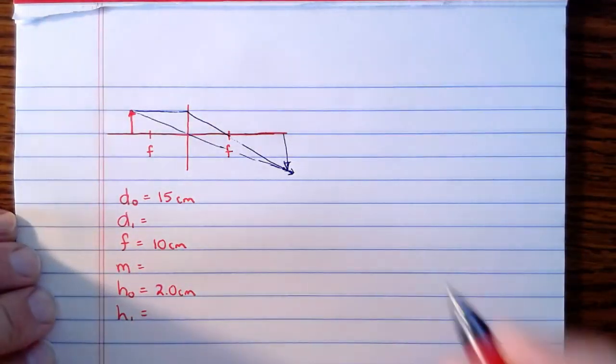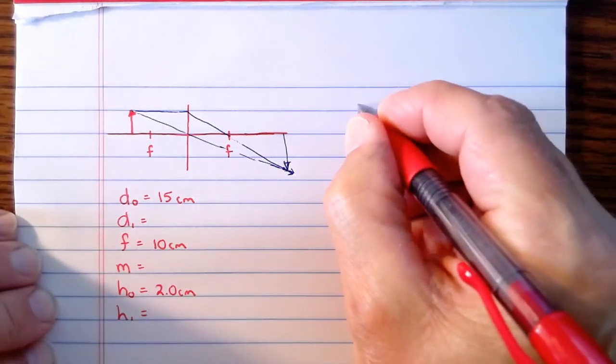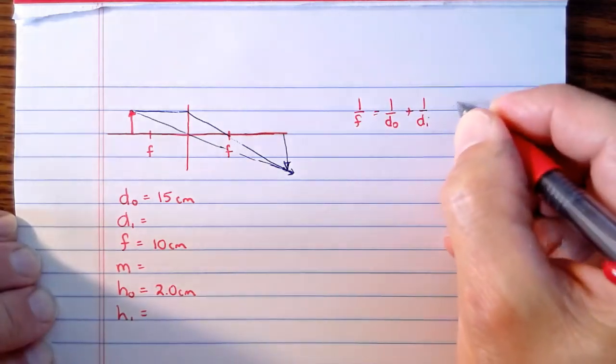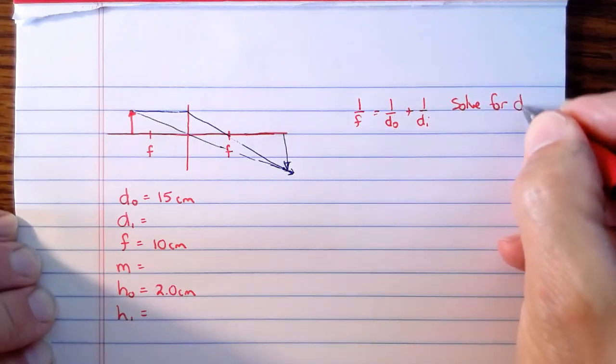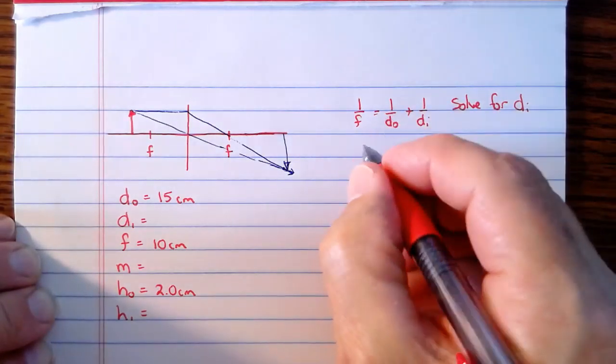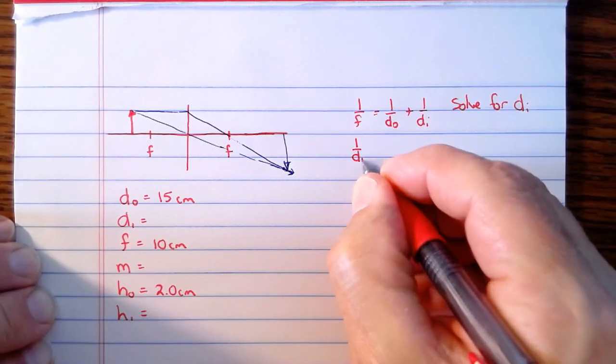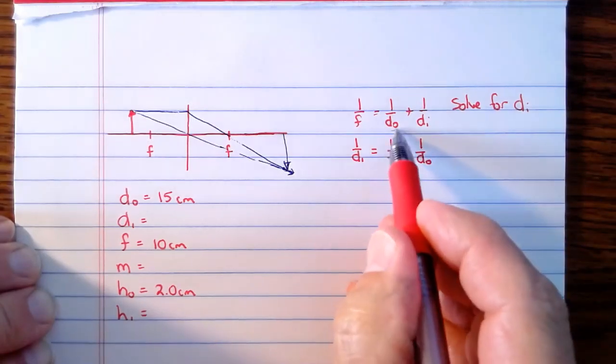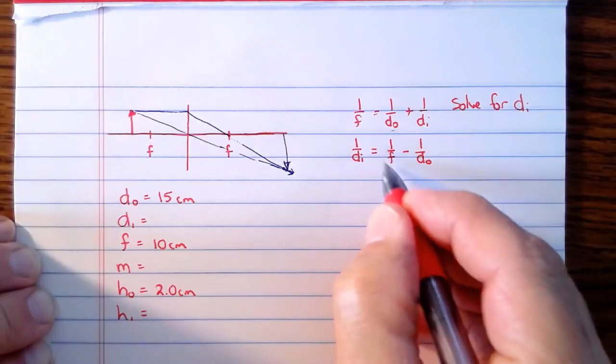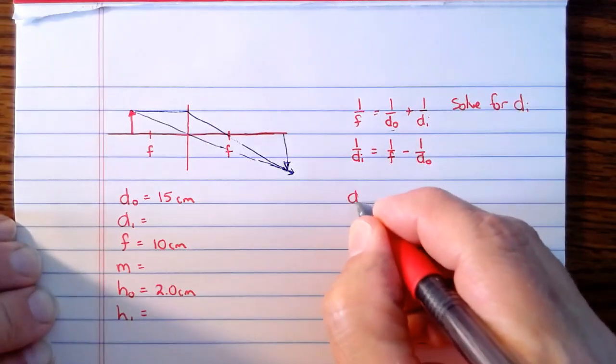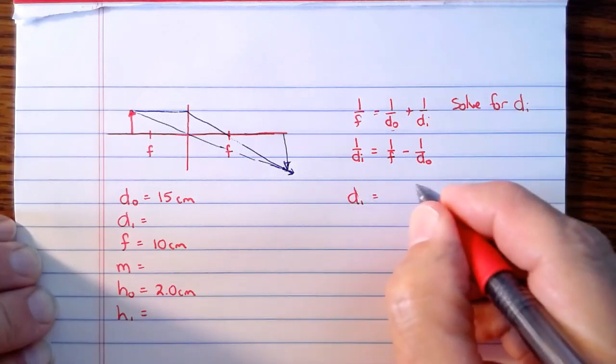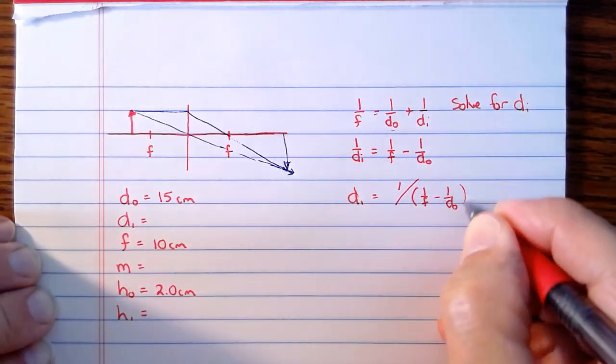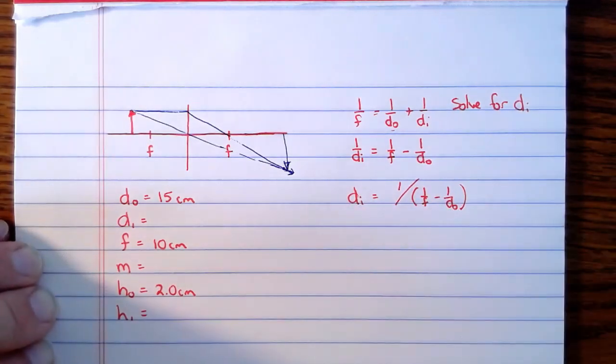So we are going to start with our Lensmaker's equation. So we are going to use 1 over F equals 1 over the distance to the object plus 1 over the distance to the image, and our first job is to solve this for the distance to the image. So it turns out that you can write it like this: 1 over the distance to the image equals 1 over the focal length minus 1 over the distance to the object. If you bring this term here to the other side, and if this expression on the right-hand side is 1 over the distance to the image, then we can actually write it like this.